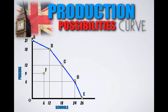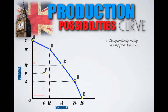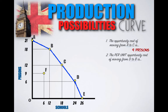Let's do another example. The production possibilities curve provided shows the various production possibility combinations of prisons and schools that Great Britain can produce given its current amount of resources. What is the opportunity cost of moving from Point A to Point C? Great Britain would be choosing to reduce its prison output from 21 prisons to 12 prisons to increase its school production from zero schools to 18 schools. The opportunity cost of moving from Point A to Point C is nine prisons. What is the per unit opportunity cost of moving from Point D to Point B? We're looking for units given up divided by units gained. By moving from Combination D to Combination B, Great Britain would be reducing its school production by 12 schools but increasing prison production by 12 prisons. The per unit opportunity cost is one school per prison.